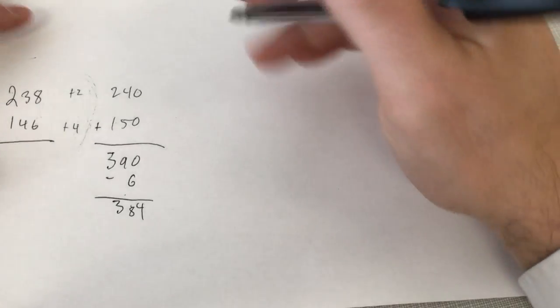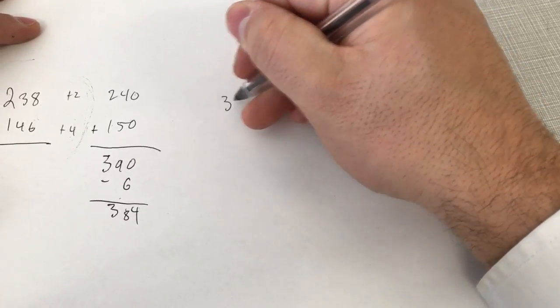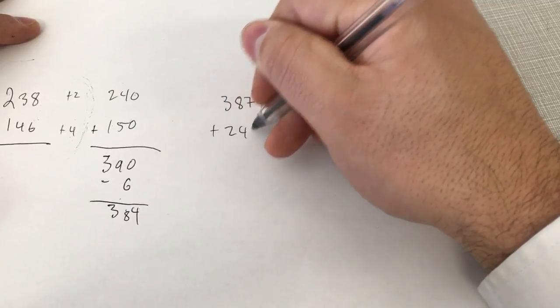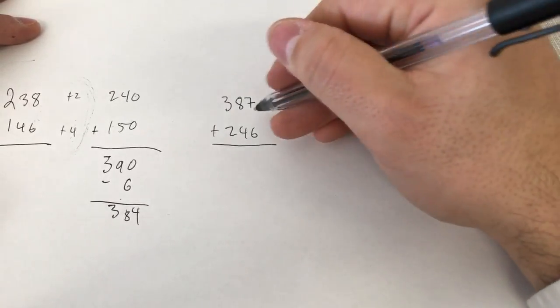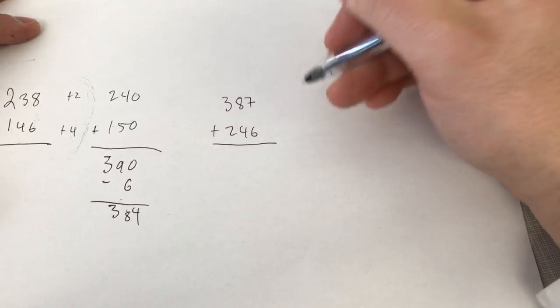Now let's do one more example before I finish this video. Let's say 387 plus 246. So 387, to bring it to the nearest 10, we have to round up always. So we're always rounding up.